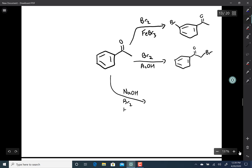If we use base and bromine, we end up getting a carboxylate. So you really have to pay attention to the conditions you're adding bromine to a molecule like this.